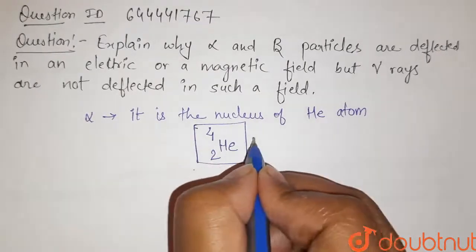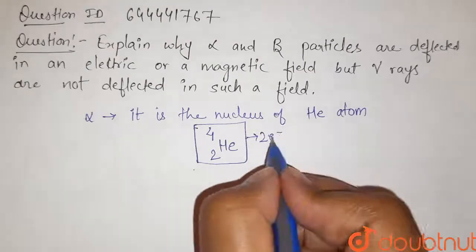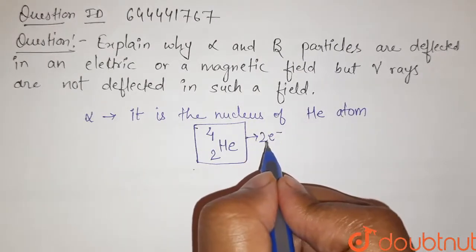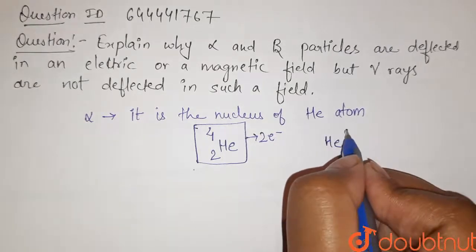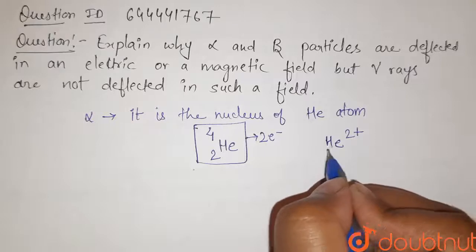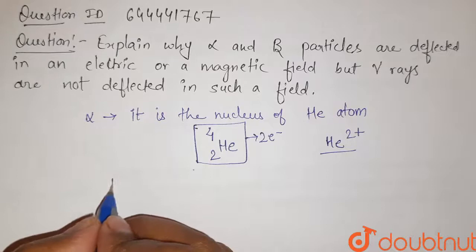Here we also have two electrons. So by removing these two electrons from atom, we will get helium nucleus. So this helium nucleus has two units of positive charge.